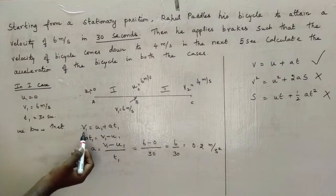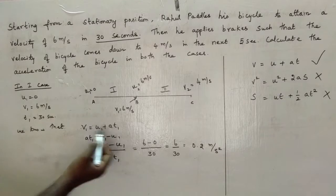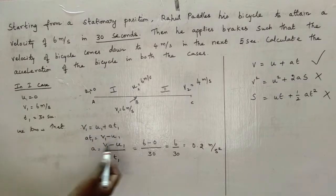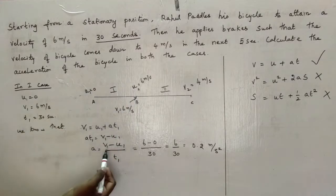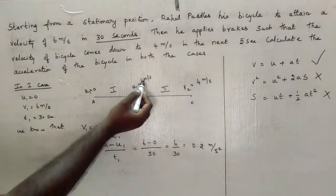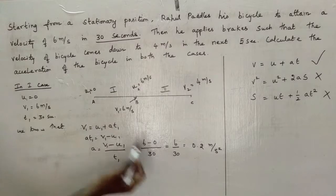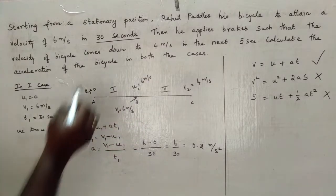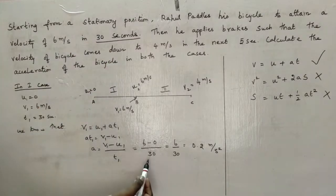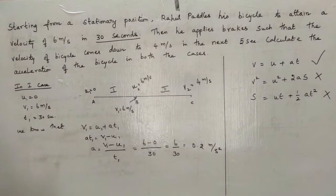So I am writing V1 = U1 + A1T1. Rearranging it, A = (V1 - U1) / T1. In the first case, the final velocity V1 is equal to 6 meters per second, the initial velocity U1 is equal to 0, and the time is 30 seconds. So I am dividing by 30 and getting 0.2 meters per second squared as the acceleration.